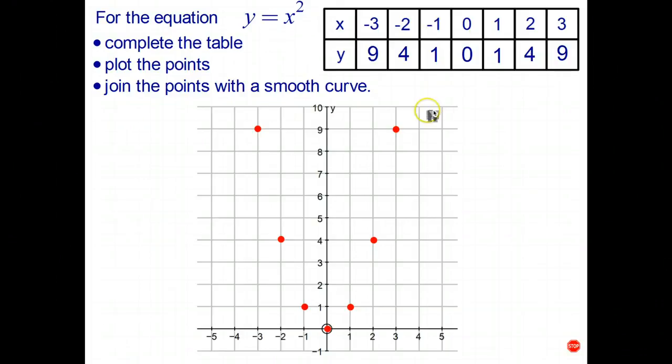And then finally, we join those up with a smooth curve. And that's what the graph of a quadratic relationship looks like.